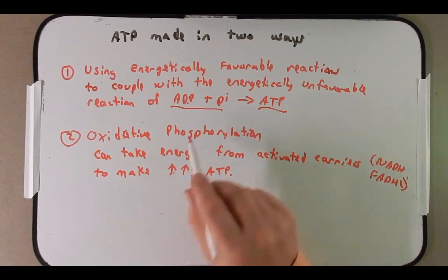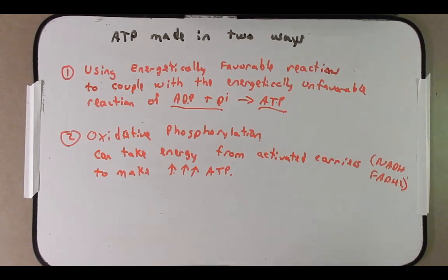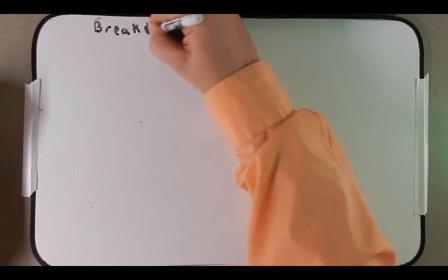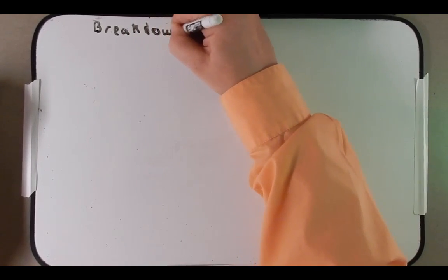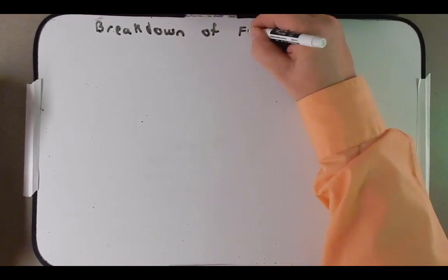The next way cells can generate ATP is through oxidative phosphorylation, which can take energy from activated carriers like NADH and FADH2 to make a lot of ATP. We're not going to talk about oxidative phosphorylation yet — that's in the next chapter, so we'll talk about that later next week. Next I'd like to talk about the breakdown of food molecules.